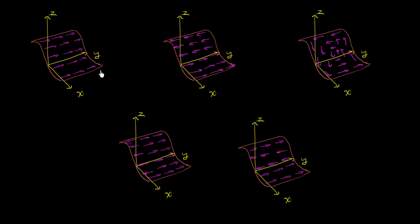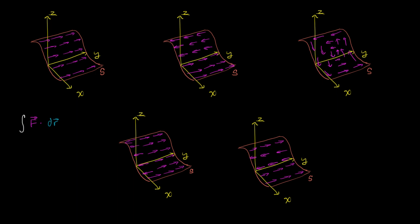I've drawn multiple versions of the exact same surface S — five copies of that exact same surface. I want to think about the value of the line integral of f dot dr, where f is the vector field drawn in magenta in each of these diagrams. Obviously it's different in each diagram, and the only part of the vector field I've drawn is the part that's along the surface.